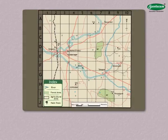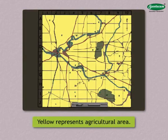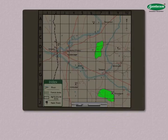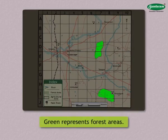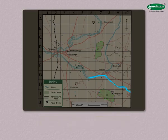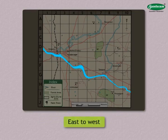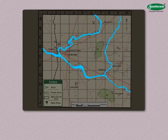In the map, a big area is shown in yellow. From the index, we see that yellow represents agricultural area. This shows that agriculture is practiced in a large area of this region. In the map, two areas shown in green are easily noticed. Refer to the index to find that green represents forest areas. The main river in this region flows from east to west. This is shown by the arrow in the course of the river. Two tributaries join it from the north. The main river and its tributaries are shown in blue.